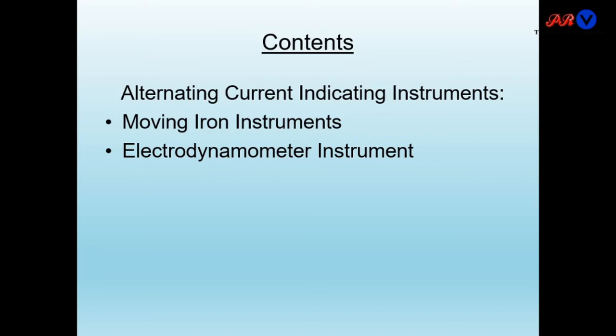Welcome to PRV Solution. In this lecture we will study alternating current indicating instruments. Moving iron instruments were already discussed in an earlier part, so now we will study electrodynamometer instruments, which are also used for AC measurements.